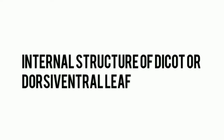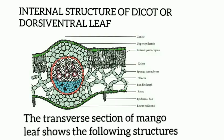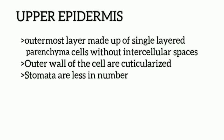Internal structure of dicot or dorsiventral leaf. The transverse section of mango leaf shows the following structures, as seen in the picture given. Upper epidermis: it is the outermost layer made up of single-layered parenchyma cells without intercellular spaces. The outer wall of the cells are cuticularized. Stomata are less in number.